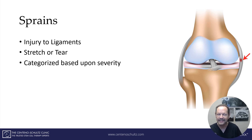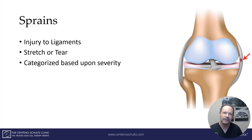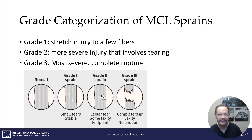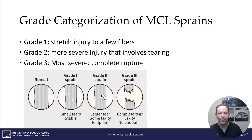So a sprain is simply an injury to a ligament. It can either be a stretch or a tear, and it's categorized based upon the severity of the tear. Like everything else in medicine, it's categorized grade one, grade two, and grade three.